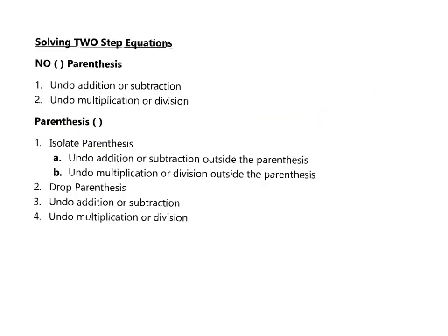When we go to actually solve these equations, there will be problems with parentheses and problems without. When you don't have parentheses, your first step is to undo the addition or subtraction, and your second step is to undo the multiplication or division. When you do have parentheses, the first job is to isolate the parentheses — undo whatever operation is outside the parentheses, then drop the parentheses, and finally undo the remaining addition/subtraction or multiplication/division.